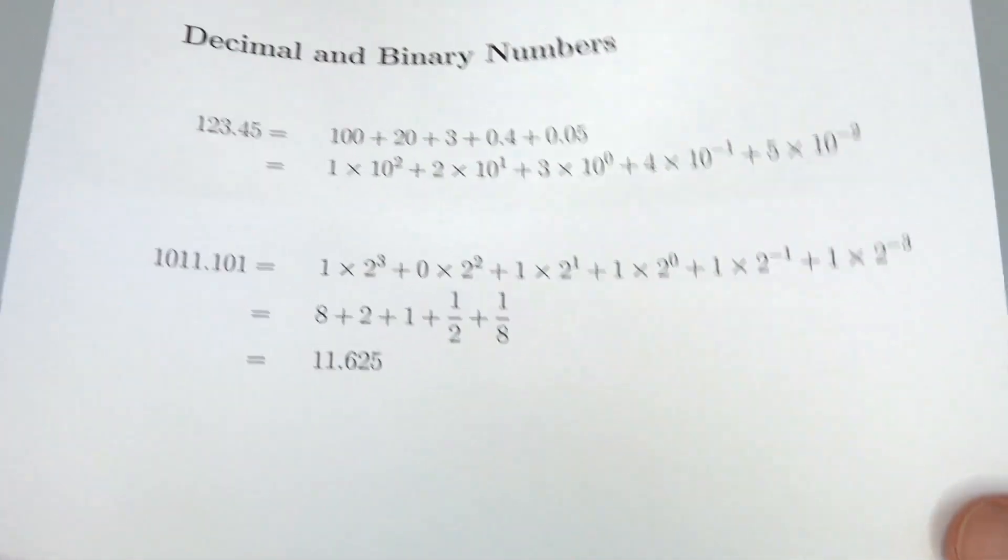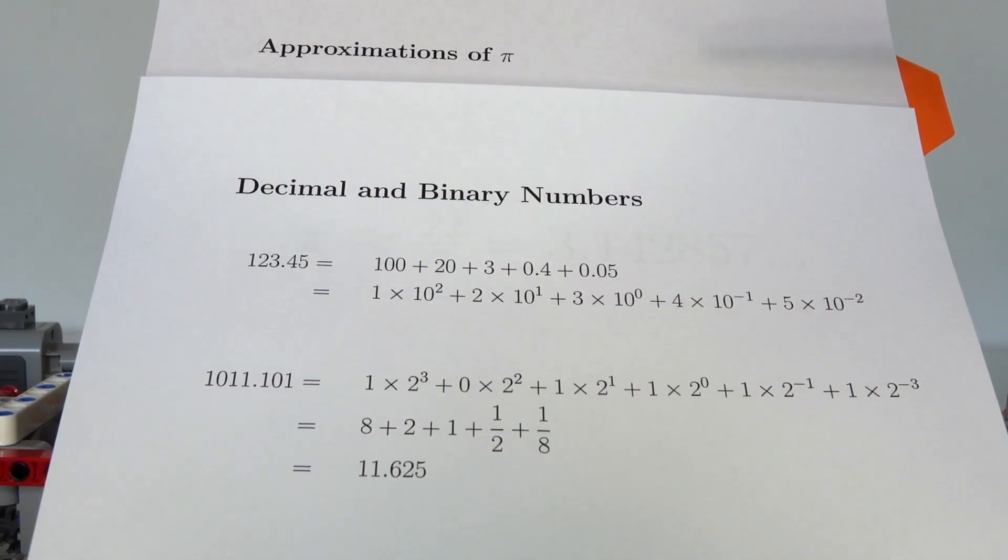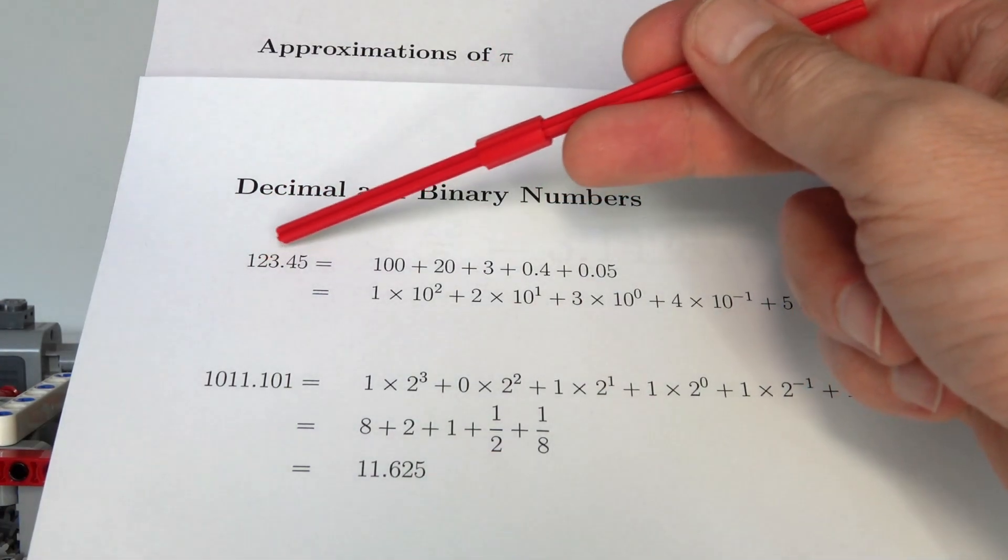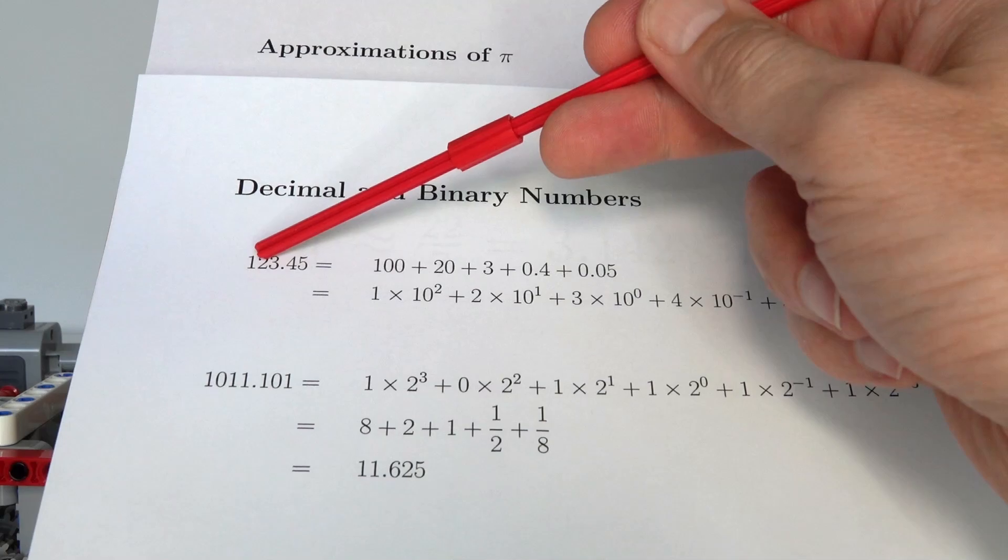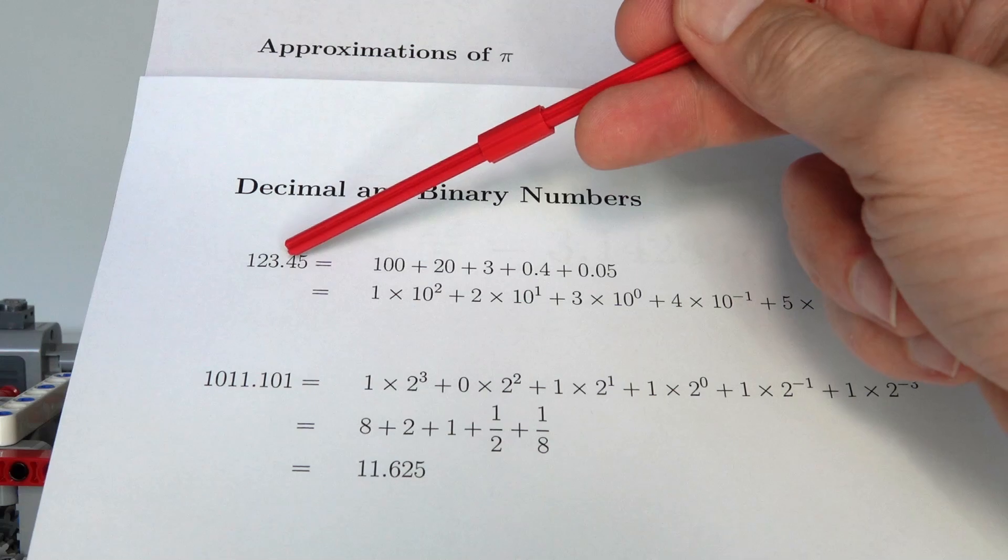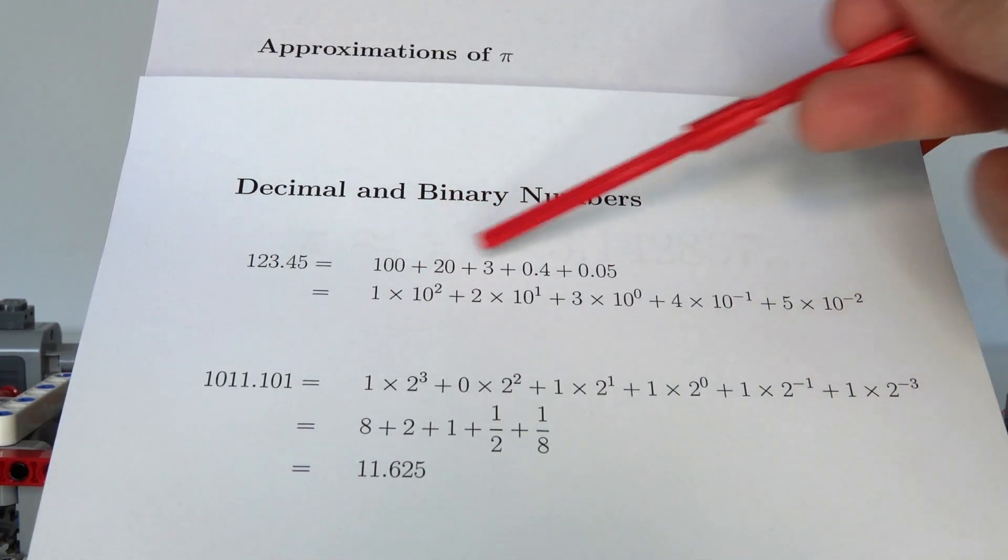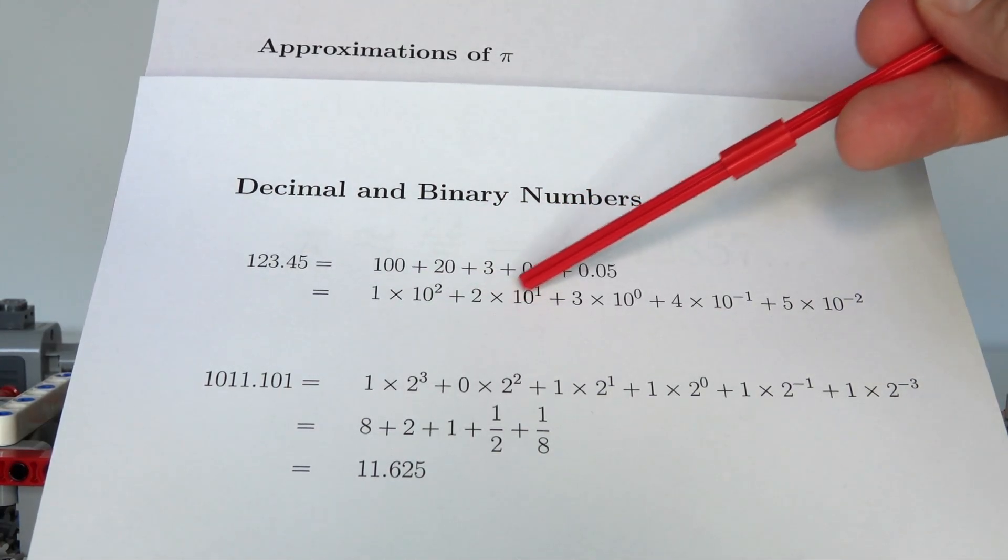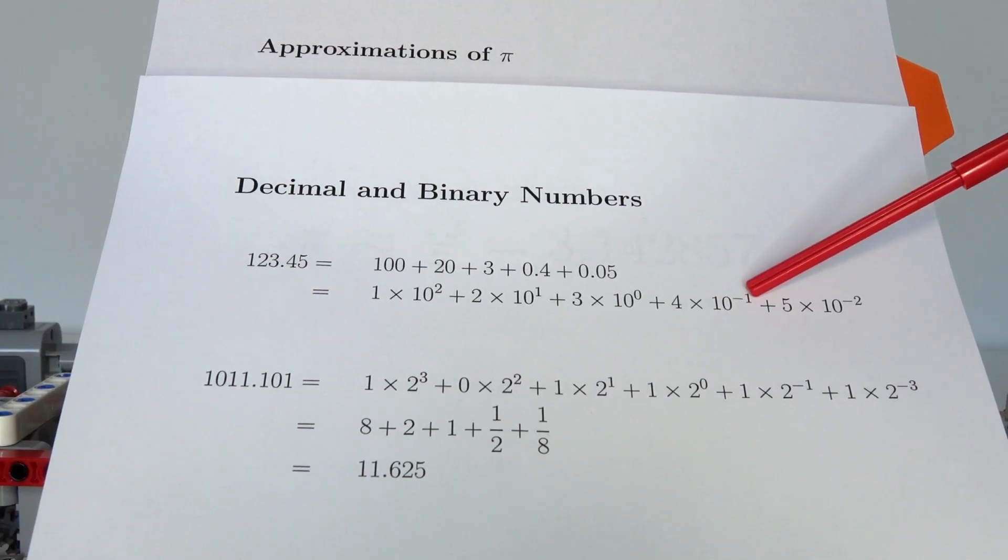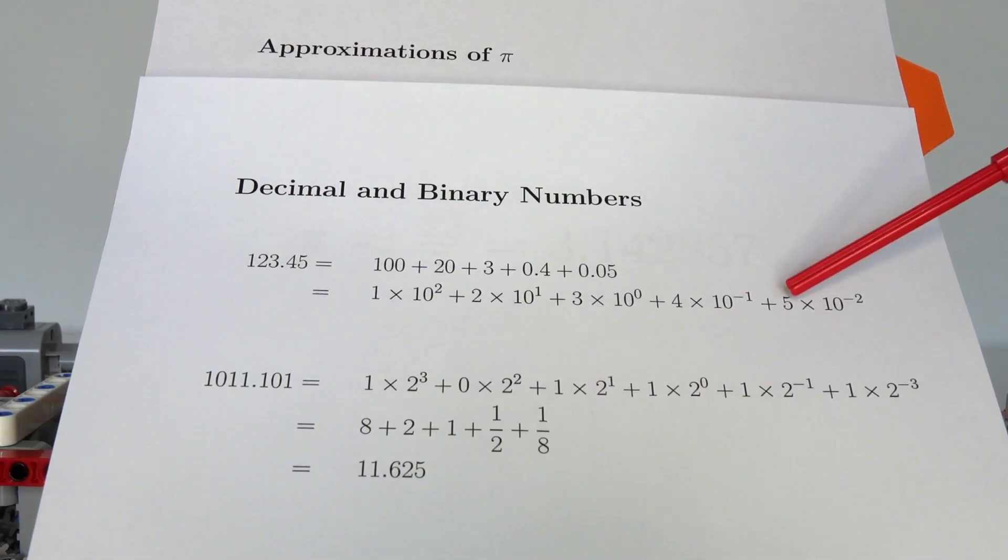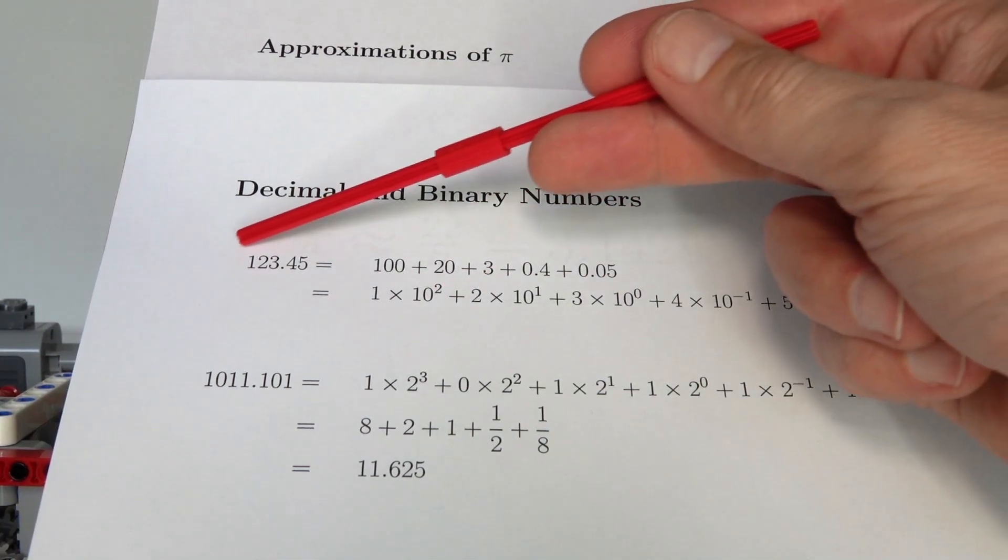So what do I mean by a binary expansion of Pi? I'm talking about representing Pi with a binary number. Binary is simply another way of representing numbers. We normally use the decimal system, which uses powers of 10 to represent each digit. For example, the number 123.45 in decimal means one lot of 100 plus two lots of 10, which is 20, plus three lots of 1s. After the decimal, we've got four lots of one tenth, which is 0.4, and five lots of one hundredth, which is 0.05. That's how we expand a decimal number into its components.